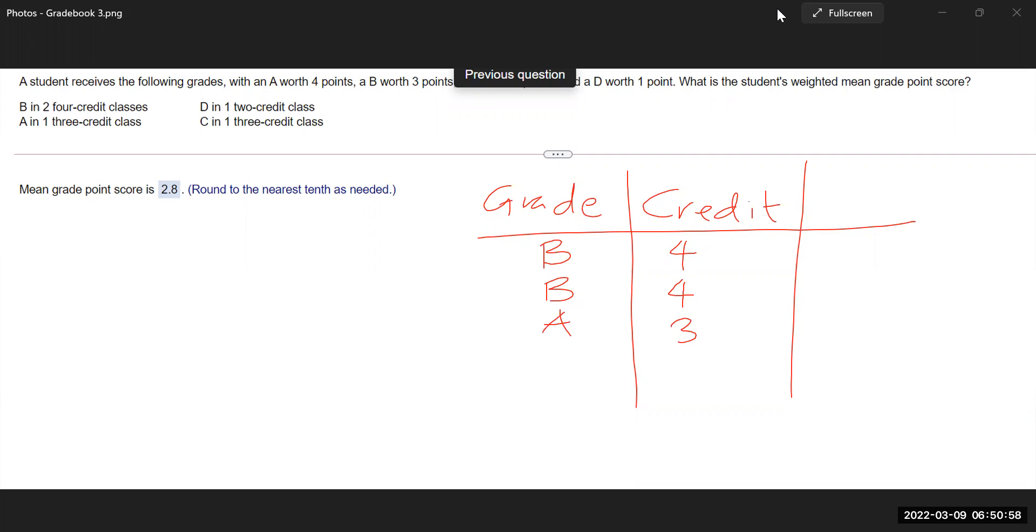And D in one two credit class. So a single D and the credit that goes with that is one. And C in one three credit class. So C and the credit that goes with that is three. Sounds good. Nice. Now that you've done this.